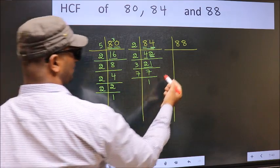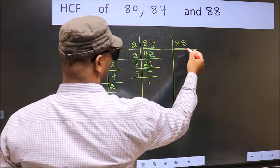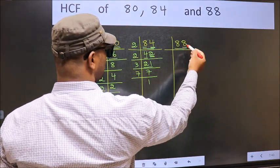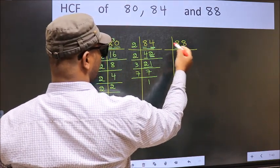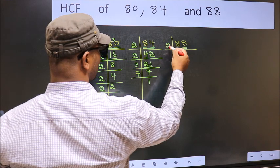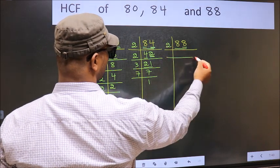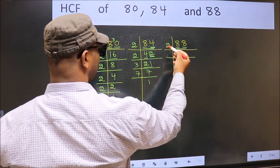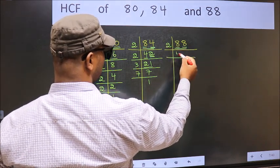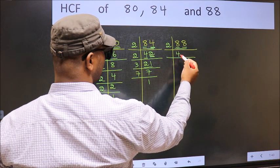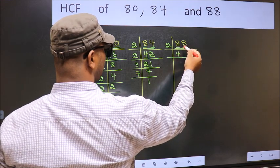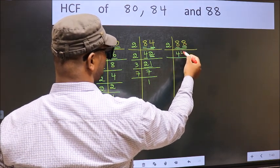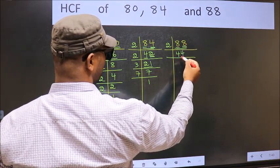Now the other number, 88. Last digit 8, so take 2. First number 8. When do we get 8 in the 2 times table? 2 fours, 8. The other number 8. When do we get 8 in the 2 times table? 2 fours, 8.